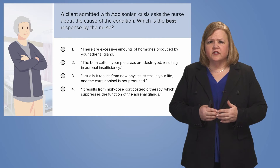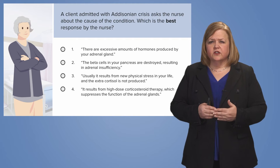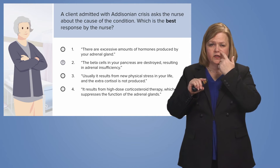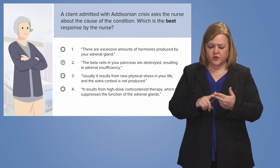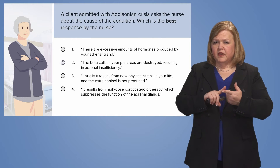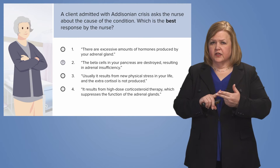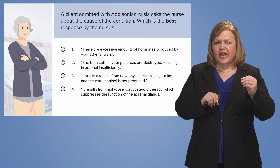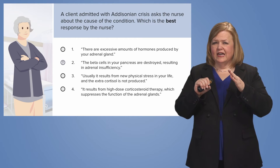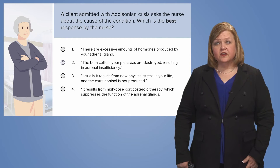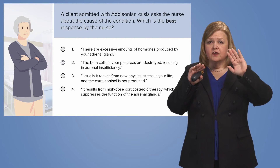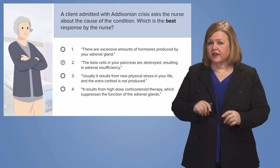Number two: the beta cells in your pancreas are destroyed, resulting in adrenal insufficiency. Wait a minute — the beta cells are in my pancreas, not my adrenal gland, and those aren't really connected. An Addisonian crisis is not caused by beta cells being messed up in the pancreas. Do you see the kind of conversations that go on in our minds? When I get to an answer like that, I'm going to leave it alone and walk on to another answer choice — I'll come back to number two.